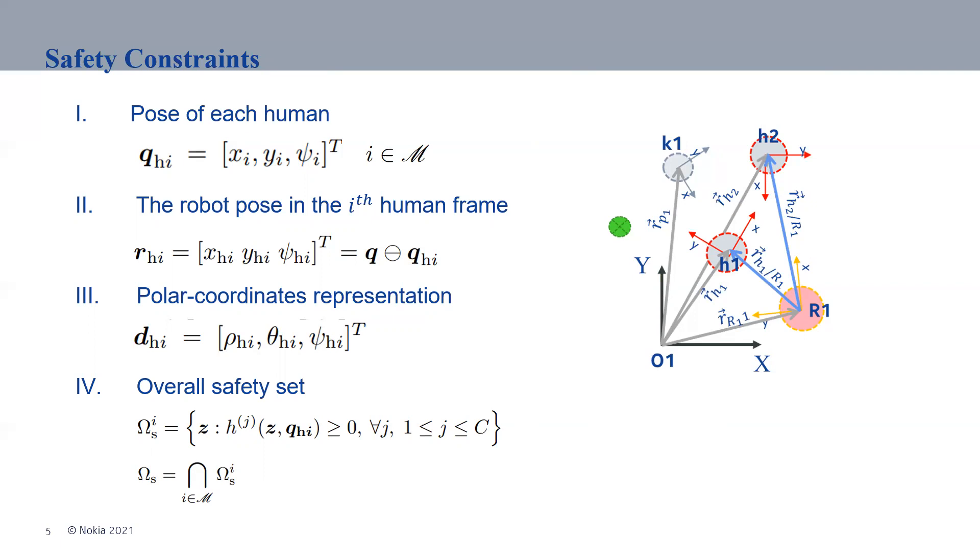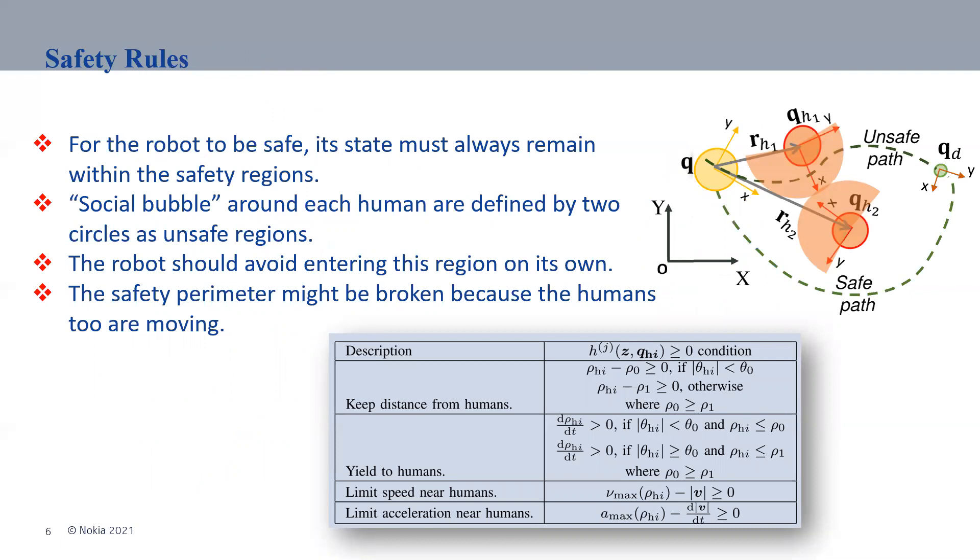The overall safety set is the combination of all the safety sets for any individual. The safety rules are defined in the table. The robot going from a given point to a desired point shouldn't get inside the safety bubbles around the human. The safety bubbles are a smaller circle and a bigger circle. The bigger circle is to the front of the human so the robot wouldn't break the human's line, and the smaller circle keeps the robot outside of the safety zone around the human. We call this keep distance from humans and yield to humans.